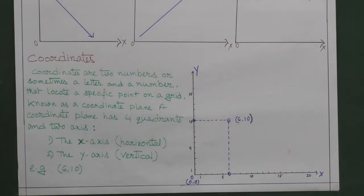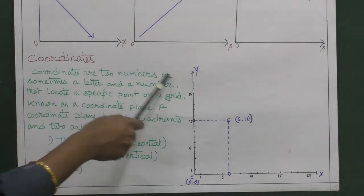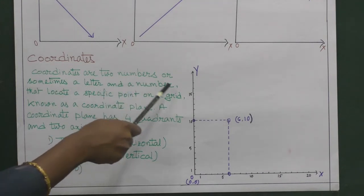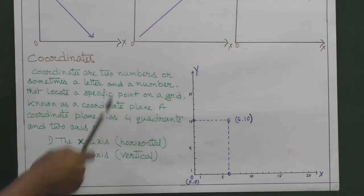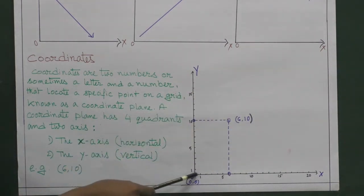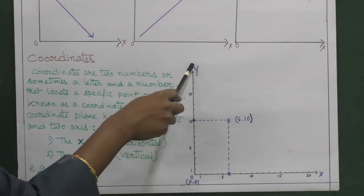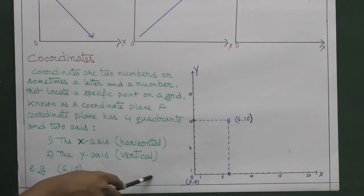So this is our last topic of this chapter: coordinates. Coordinates are two numbers, or sometimes a letter and a number, that locate a specific point on a grid. This is our coordinate plane where we can see this is our x-axis, positive x-axis, and this is our positive y-axis. If we extend the x-axis after 0, then it will come to this side and will be considered as the negative x-axis.